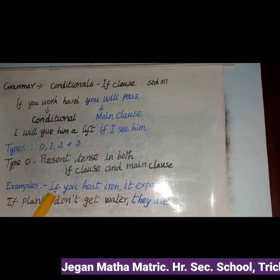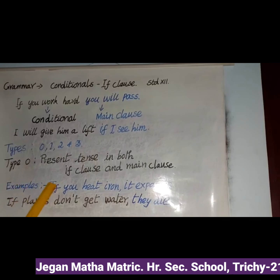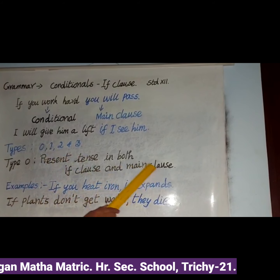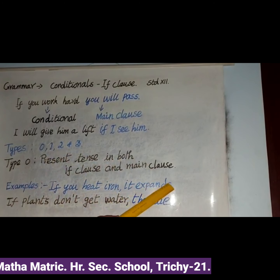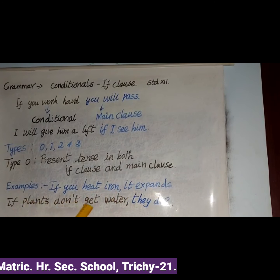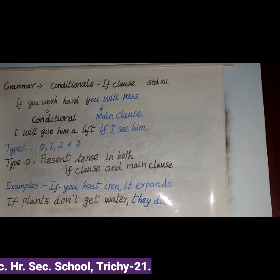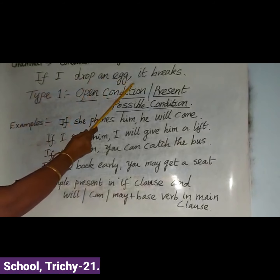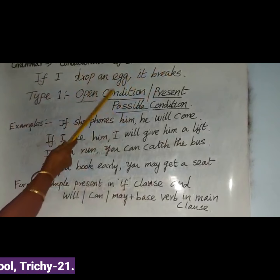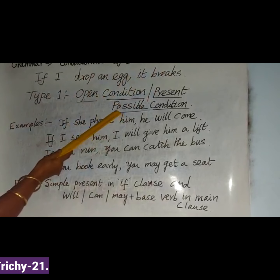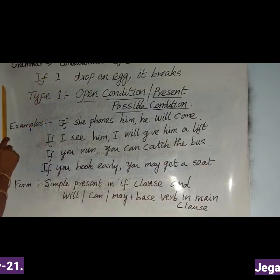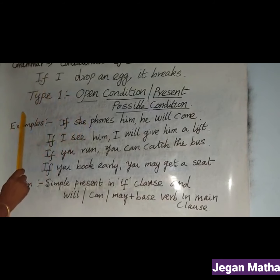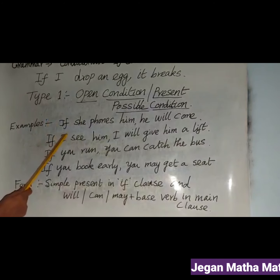So keep in mind: in Type 0, we use present tense in both the if-clause and the main clause. Type 0 is used for scientific truth, general truth, and actions that happen normally — things that are a normal action that always happens.